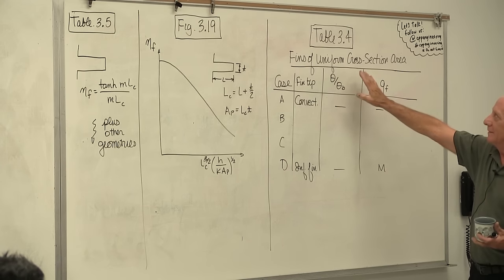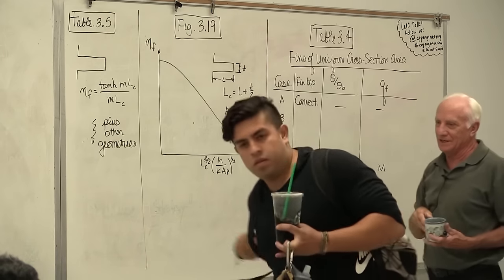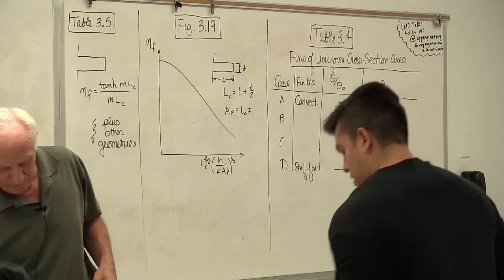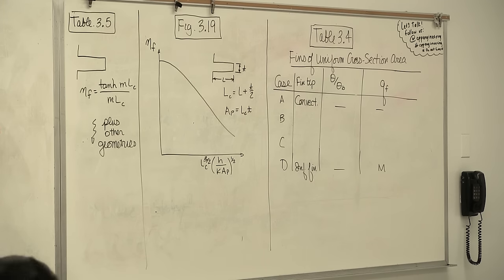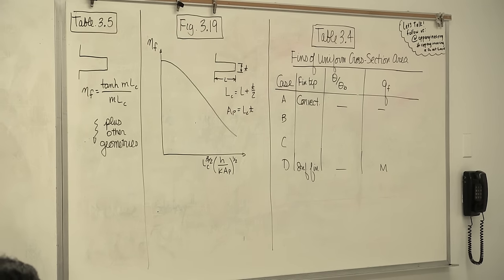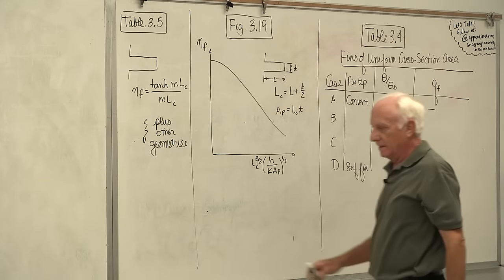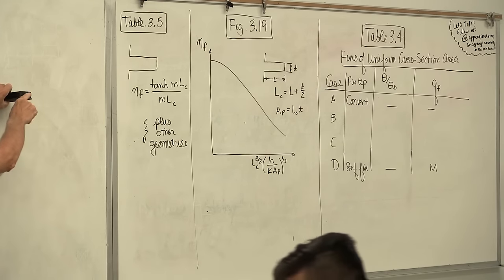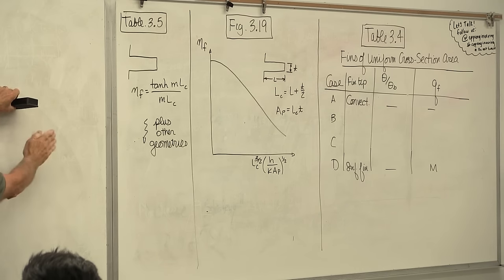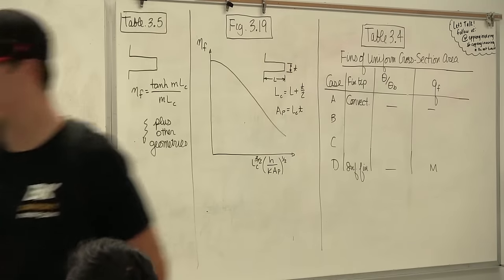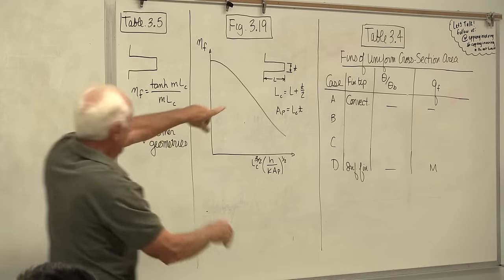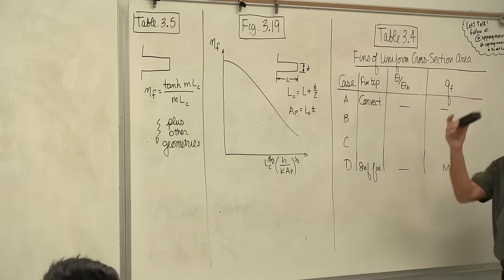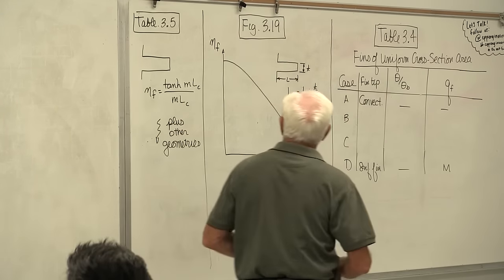This table can only be used for fins of uniform cross-section. For a pin fin, if you slice it normal to the x-axis at any x location, the area is pi-r-squared everywhere — it doesn't change from tip to base. For a rectangular fin, slicing at any location gives thickness times width, which also doesn't change. That's a uniform cross-section fin, and you can use this table for it.